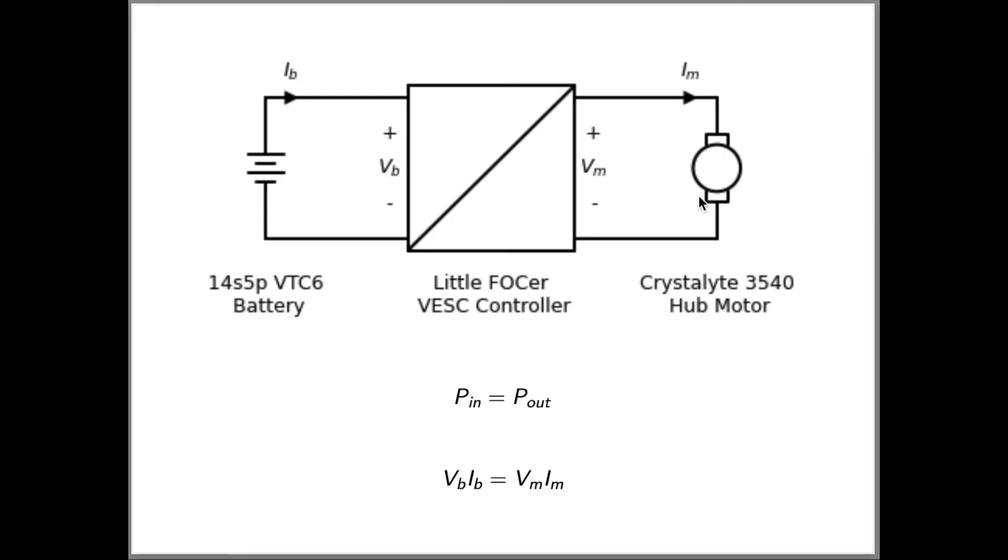As the RPM increases, the motor voltage increases, causing the output voltage and the output electrical power to increase. The controller raises the input battery current to match the input and output power. The controller lets the battery current increase up to the maximum limit and holds it there until the motor voltage begins limiting the motor and battery currents.